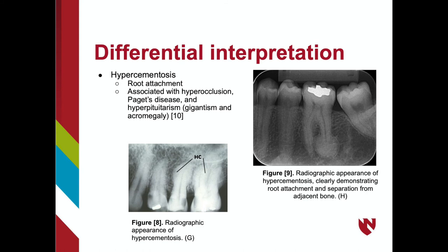Hypercementosis occurs when there is excess deposition of cementum on the roots of teeth. There is a clear separation of hypercementosis from the adjacent bone, as you follow the lamina dura and PDL space, as you can clearly see in Figure 9. Hypercementosis is typically associated with patients having hyperocclusion, Paget's disease, and hyperpituitarism. A primary differential diagnosis between hypercementosis and idiopathic osteosclerosis is to identify if there is any root attachment within the lesion — in idiopathic osteosclerosis it is not associated with root attachment, whereas hypercementosis will be.